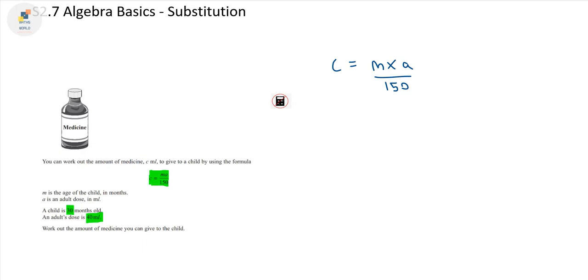Work out the amount of medicine you can give to the child. C is the amount of medicine - that's the thing that we're interested in that's already been made the subject in this equation. So what we need to do is apply substitution. We're replacing our M for how many months old the child is. Our M in this case we can substitute for 30, and our A which is the adult's dose is 40 milliliters.